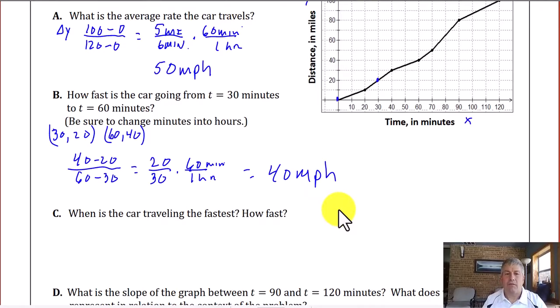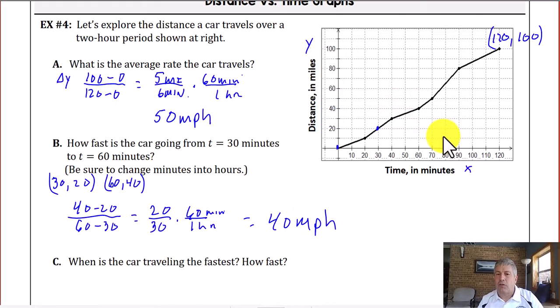When is the car traveling the fastest? And how fast? Well, I look for the steepest slope. And it appears that that steepest slope occurs between 70 and 90 minutes. So that ordered pair is 70, 50 and 90, 80.